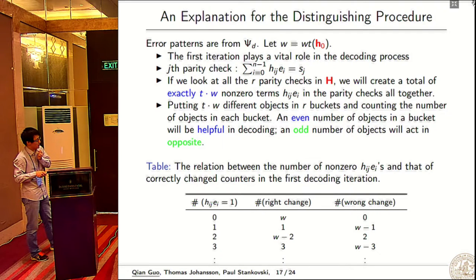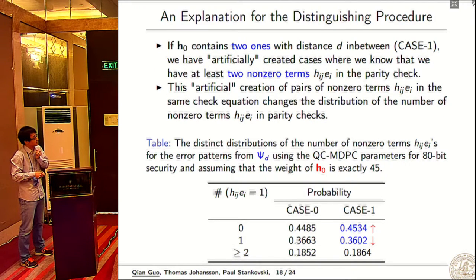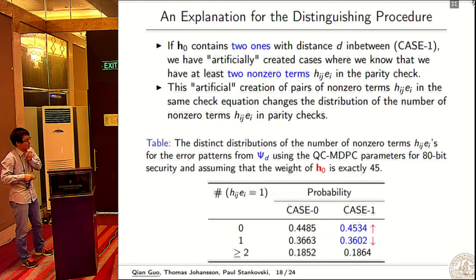This table shows the relation between the number of nonzero h_i e_i's and the number of correctly changed counters. For each equation, it will change w neighboring counters telling them to increase. We see that even is good and odd is bad for decoding.